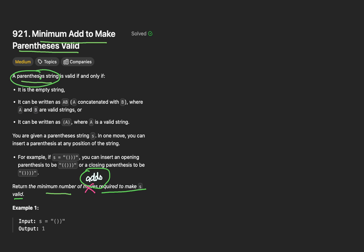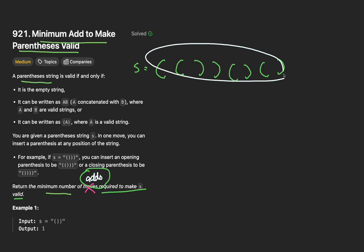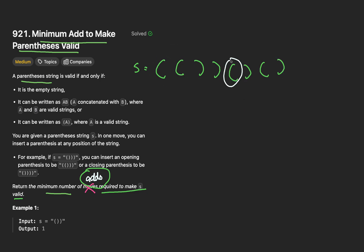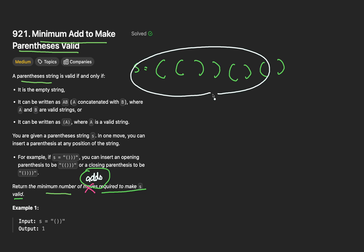So first off, what is a parentheses string? Well, it's a sequence of characters of only opening parentheses and closing parentheses. As you can see, you have some open parentheses and also some closing as well. Keep in mind, you can be given letters as well, but that's not too important — I'll address it later on. A second question is, what does it mean for this parentheses string to be considered valid, or balanced?